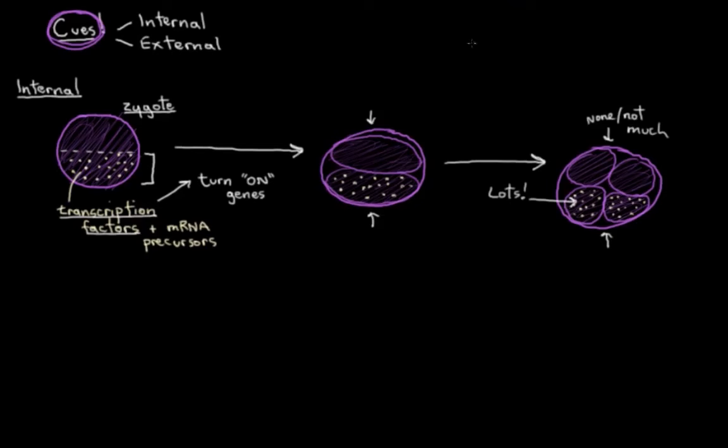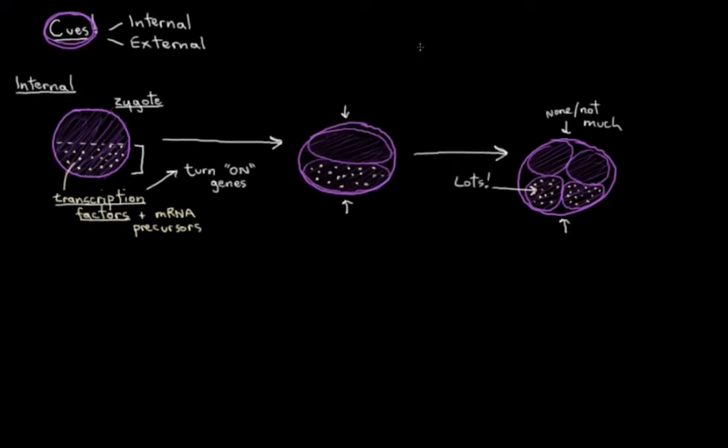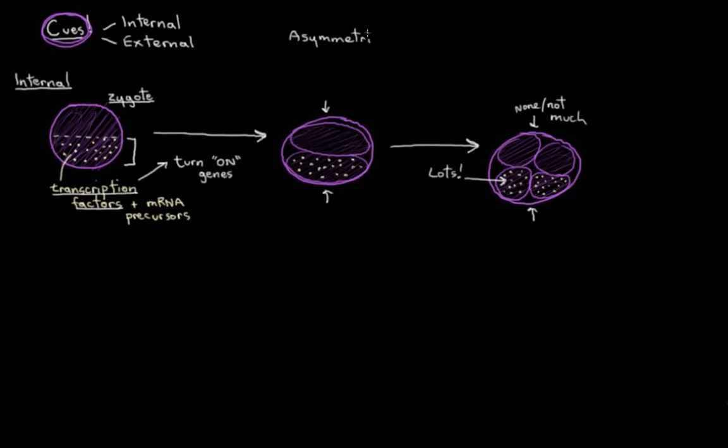So this mechanism here is pretty appropriately called asymmetric segregation of cellular determinants. It's this big mouthful here, but if we break it down, you can see asymmetric because it really just refers to how these transcription factors are not symmetrically distributed among the daughter cells here.